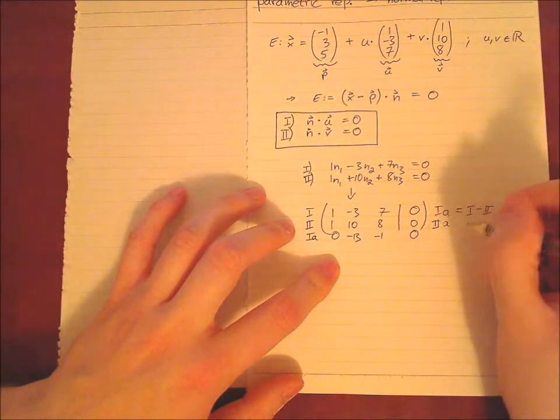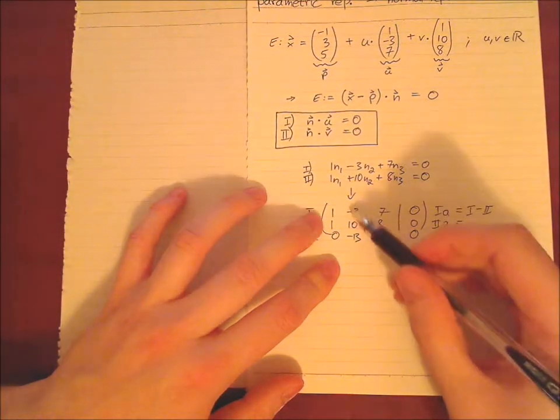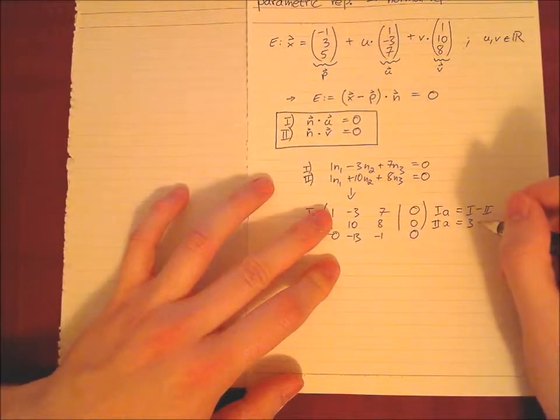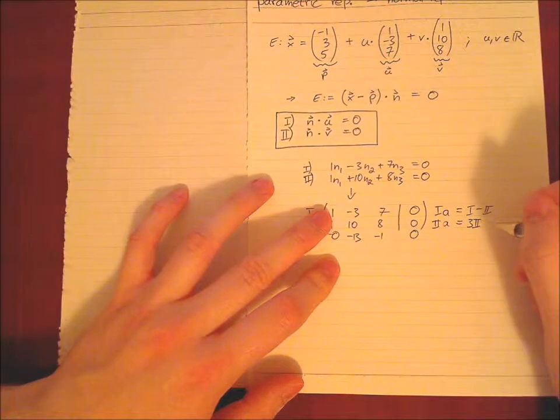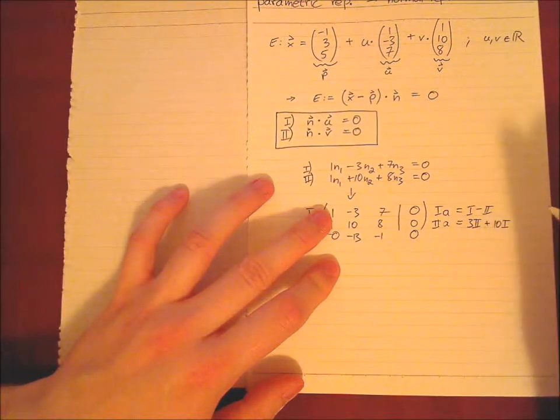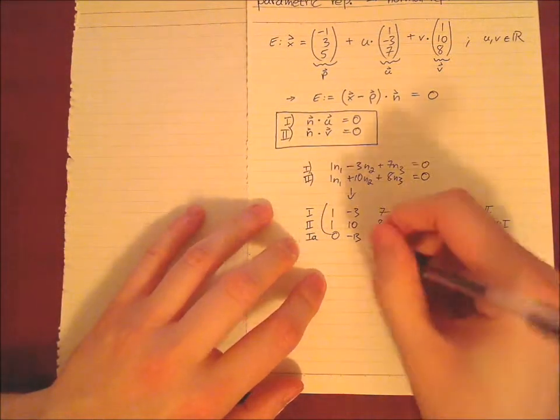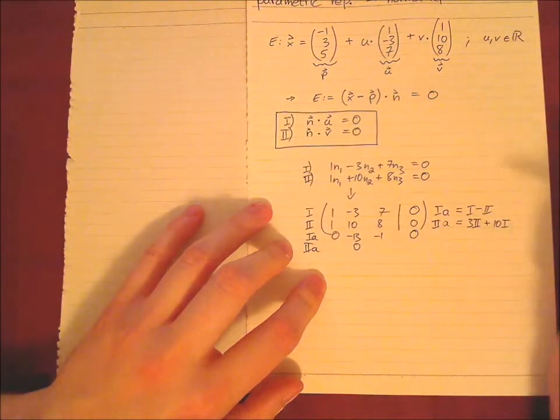Now row 2. What can we do? So we try to work out something here in the middle. So we say 3 times row 2, then we have 30, plus 10 times row 1, then we have also 30. Thirty minus thirty equals zero, so we can say we have a zero here. That's row 2.